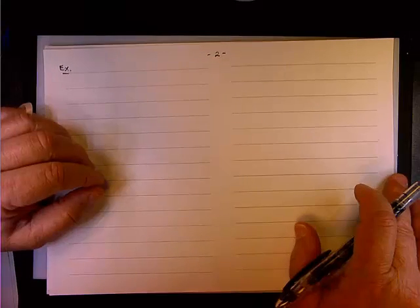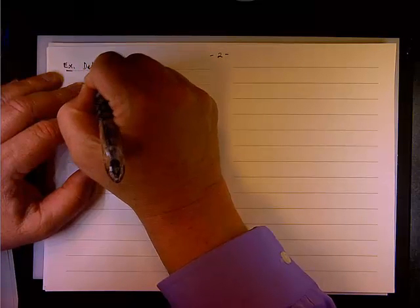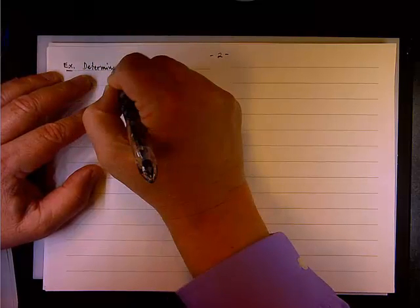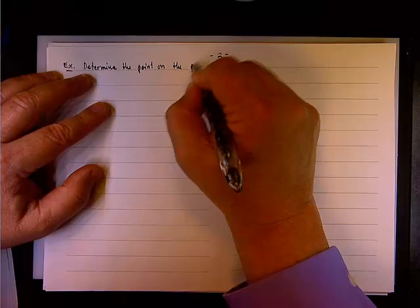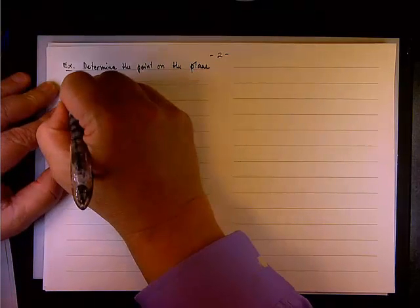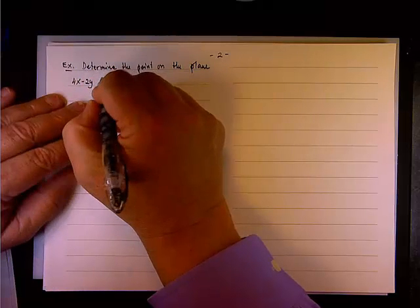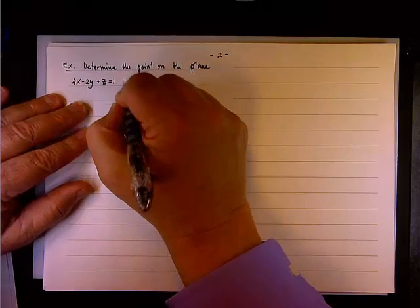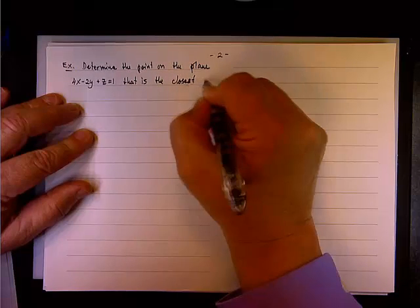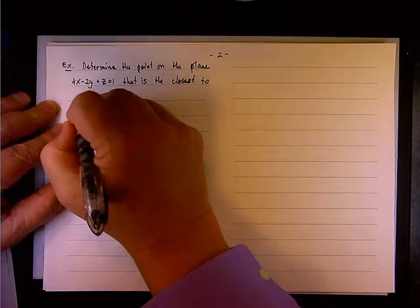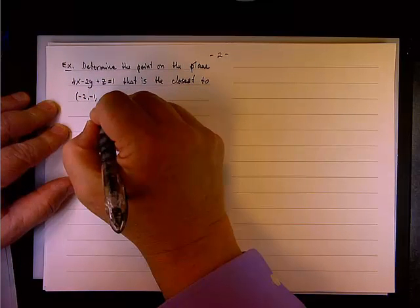We want to determine the point on the plane that is closest to another point. In this problem we need to determine the point on the plane 4x minus 2y plus z equals 1 that is the closest to the point (-2, -1, 5).